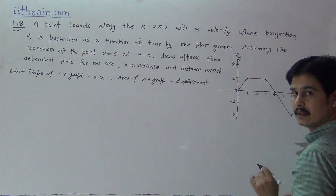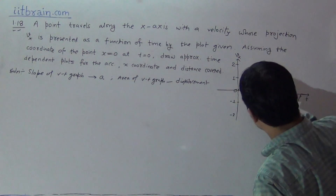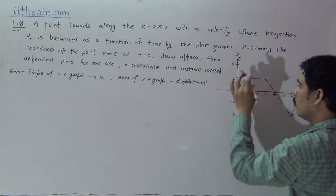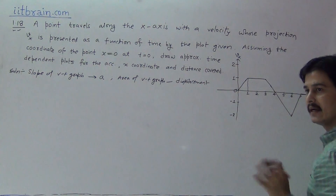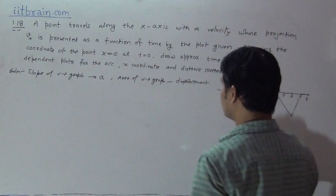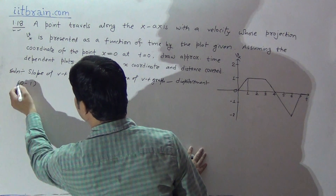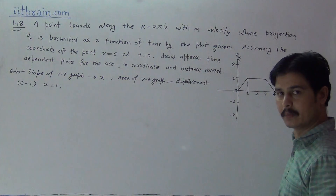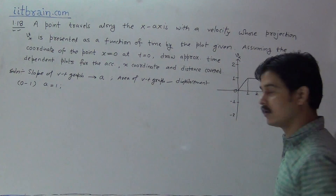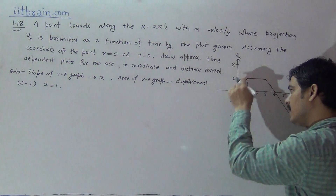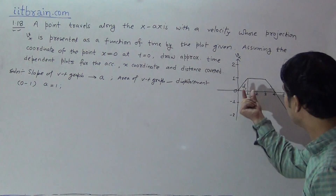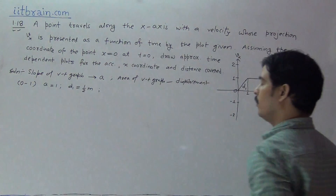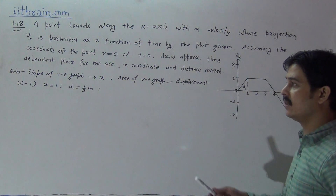From 0 to 1 second, the motion of the particle is accelerated because in this interval velocity is increasing from 0 to 1. The slope of this graph: tan θ equals perpendicular over base, which is 1 by 1, so tan θ equals 1, meaning acceleration equals 1. In the interval 0 to 1 second, acceleration equals 1. The area of this part, D1, is one-half times base times height: 1/2 × 1 × 1 = 0.5 meter. So displacement covered in this interval is half a meter.